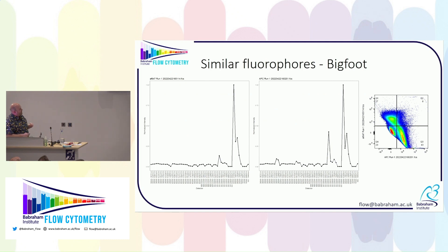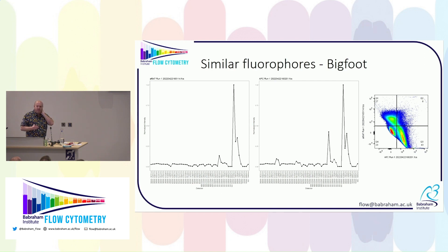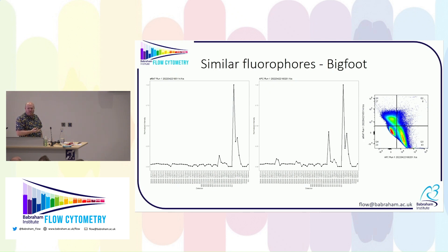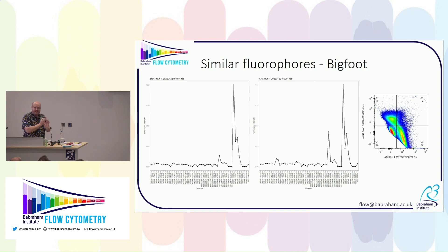Here's an example: Alexa Fluor 647 and APC. Their normalised spectra are extremely similar, but APC has this UV emission — people knew about this UV emission 10–15 years ago when UV lasers started appearing on the LSR. On a traditional spectral plot you don't see the UV emission because the emission lines never went into the UV region. But on the LSR you could see it, and people were always confused that you had to compensate from the UV with APC.